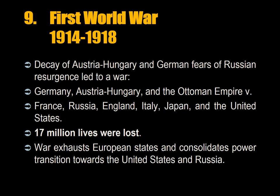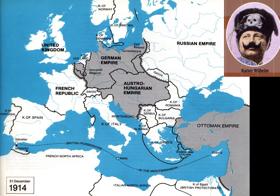The First World War, 1914–1918, was a war that included all eight of the world's great powers. The decay of the Austro-Hungarian Empire and German fears of Russian resurgence led to a war in which Germany, Austria-Hungary, and the Ottoman Empire opposed France, Russia, England, Italy, Japan, and the United States. Seventeen million lives were lost. War exhausted the European states and led to a power transition towards the United States and Russia — an outcome foreseen by the French commentator and traveler de Tocqueville.